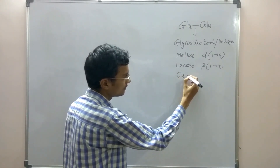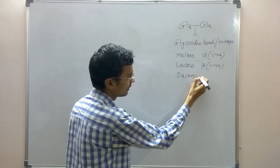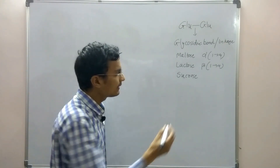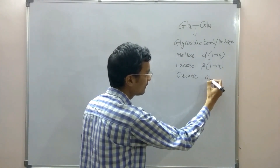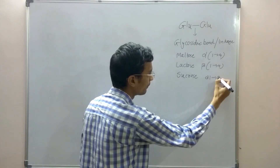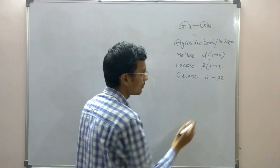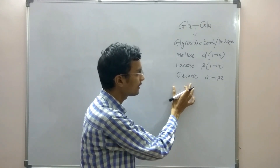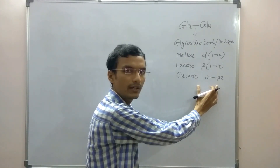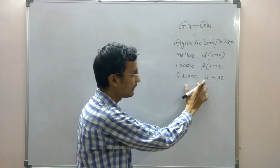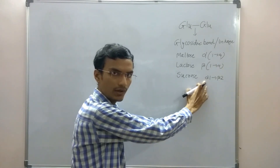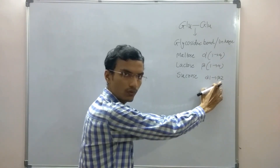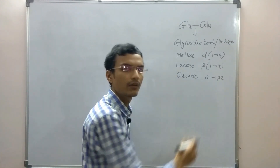The third is the well-known sucrose. In sucrose, the bond involved is alpha-1 beta-2, meaning glucose and fructose are joined with an alpha-1 beta-2 bond. Glucose is in alpha configuration and fructose is in beta configuration.